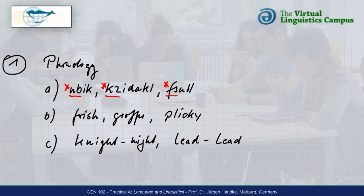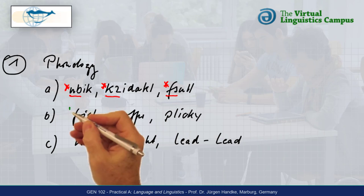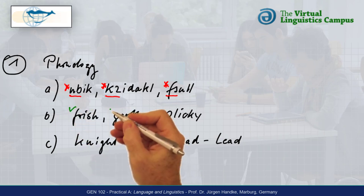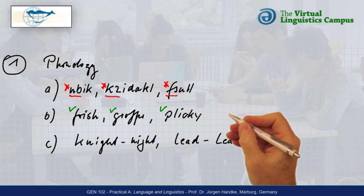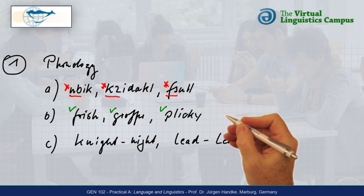Frisch, Groffer, and Plicki, by contrast, could all be items of the present-day English vocabulary, but they're not. Phonologically and orthographically, there's nothing wrong with them.